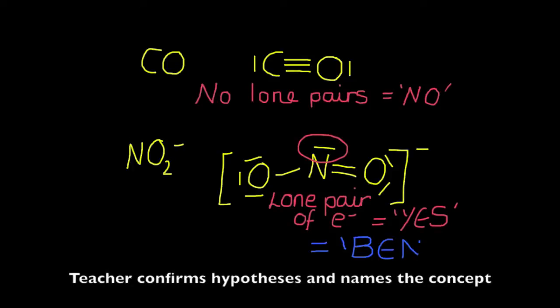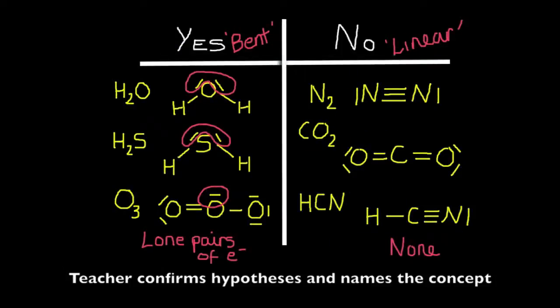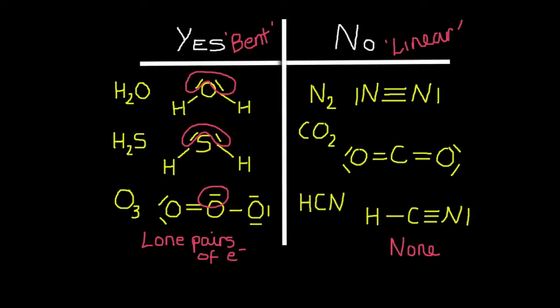The teacher then confirms the students' hypotheses and names the concept. In this case, the teacher identifies the molecular geometry that relates to whether or not these examples have a lone pair of electrons on the central atom.